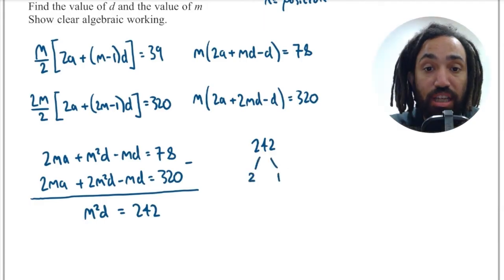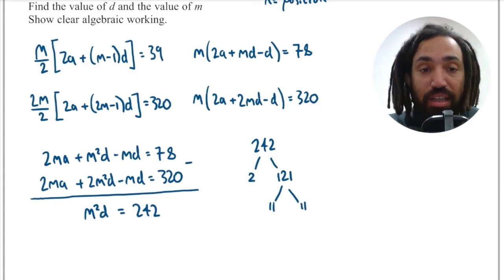So let's find the prime factors of 242. Now M squared is obviously a square because it's M squared. So what values could I let M squared equal?